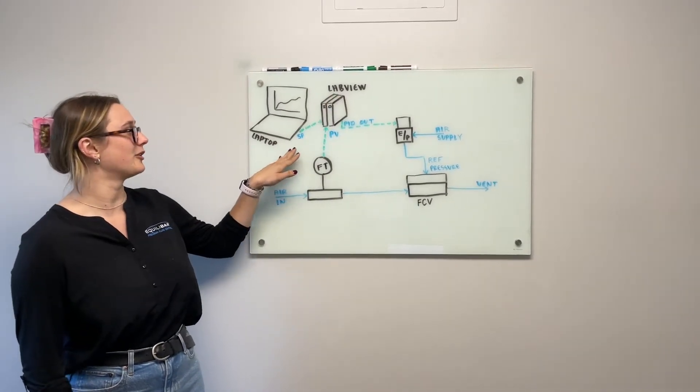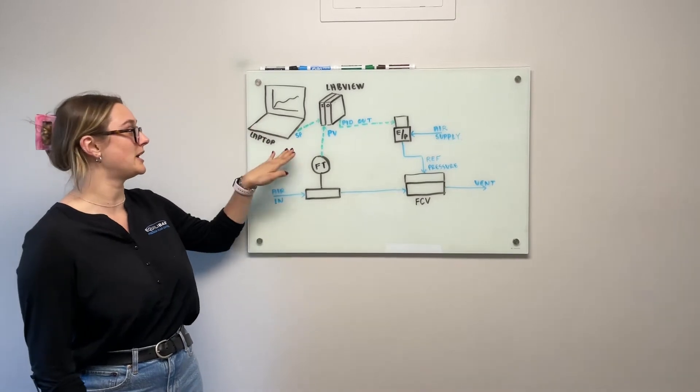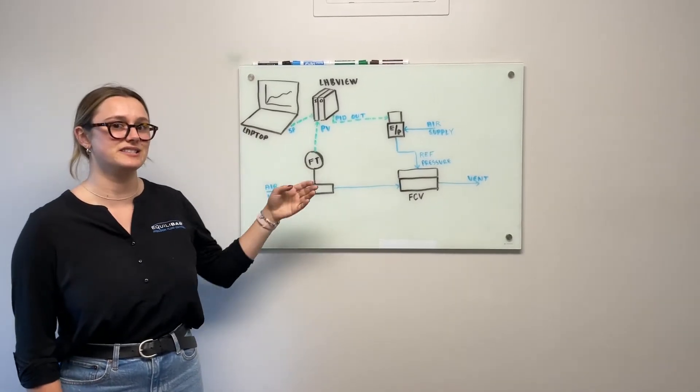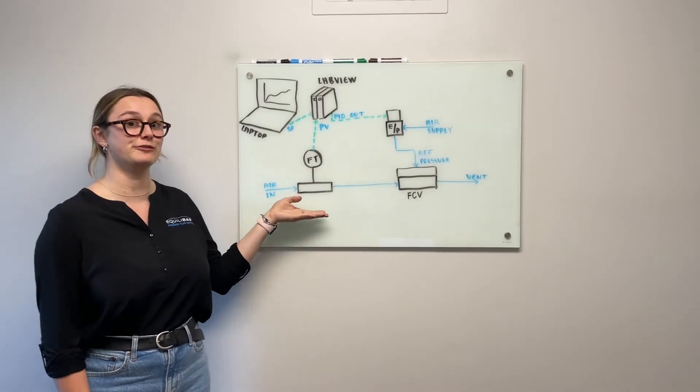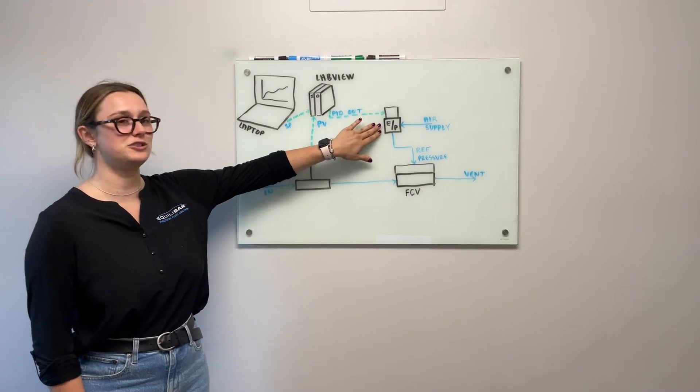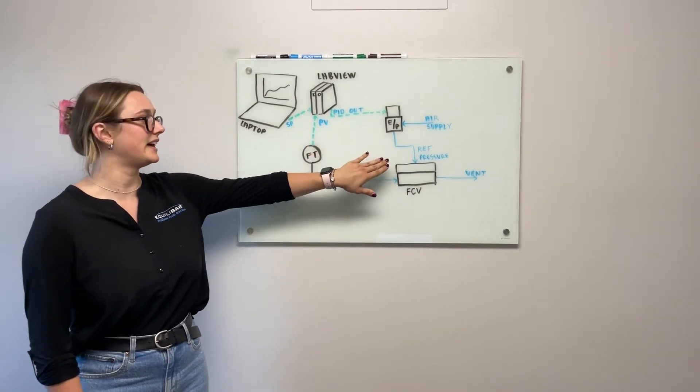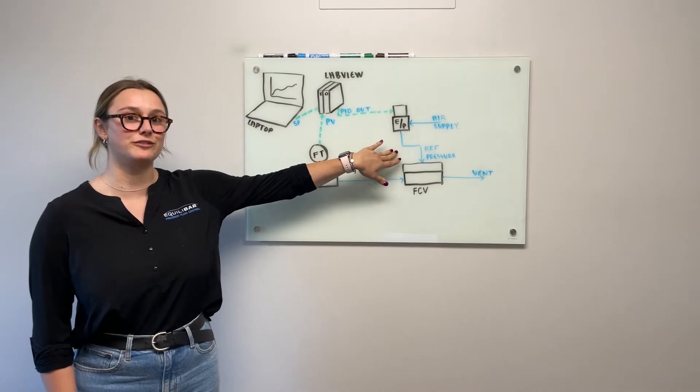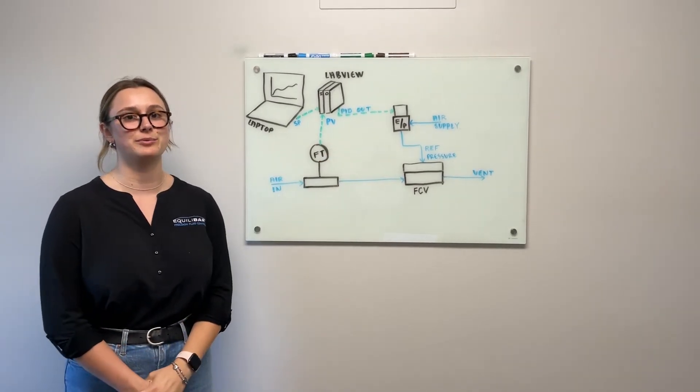We're giving the program a set point from this laptop. It is being compared to the process value, which is in this case the flow rate as measured from our thermal flow meter, and then the program is giving a PID output value to our QPV. That is ultimately changing the reference pressure on our Equilibar flow control valve to help reach the flow set point in the system.